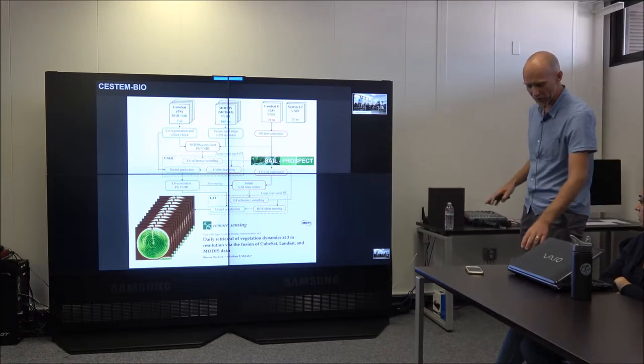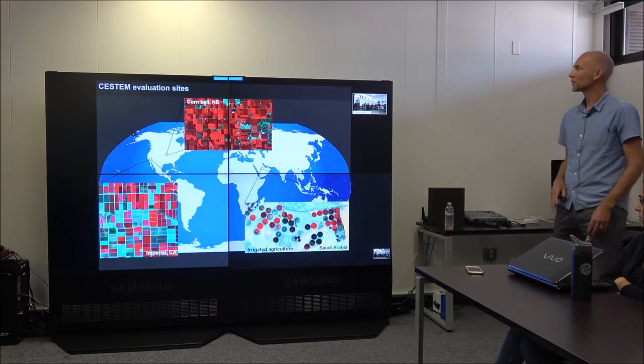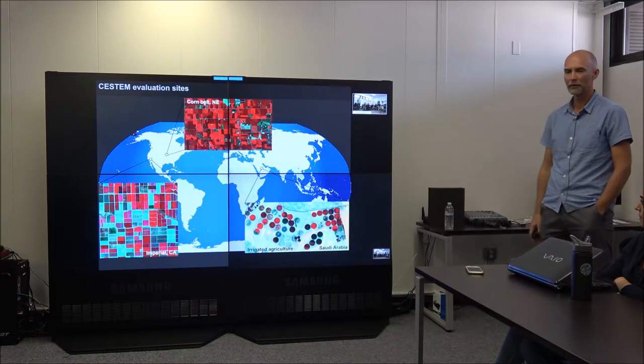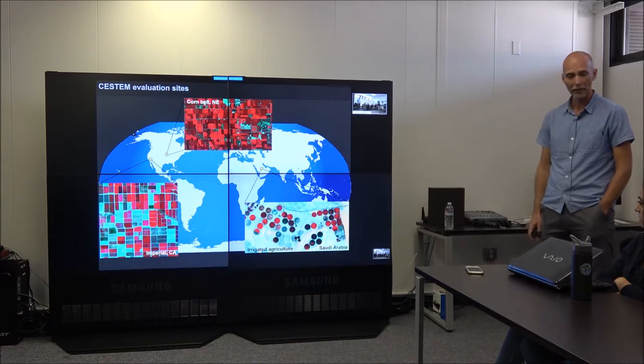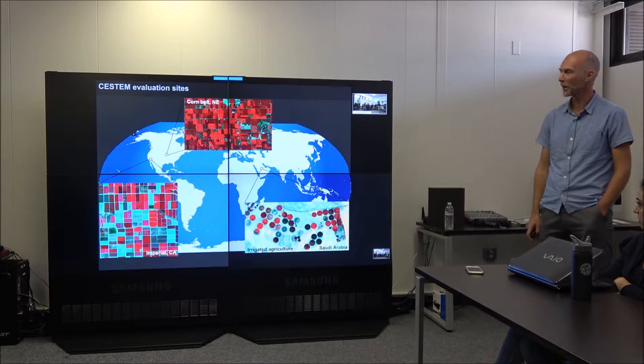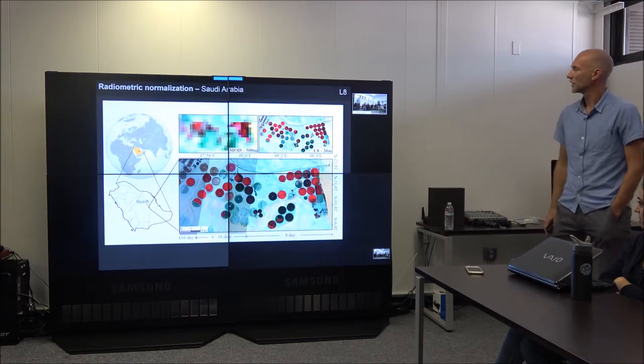It will take me an hour to explain this, so I'll just don't give it here. So I'll just focus on the results, looking at a number of evaluation sites, including a site in Saudi Arabia, where I did a lot of work, irrigated agriculture. Then we have a site in the Corn Belt in Mead, Nebraska. And then, one in your own backyard, southern California, Imperial County, close to the Salton Sea.